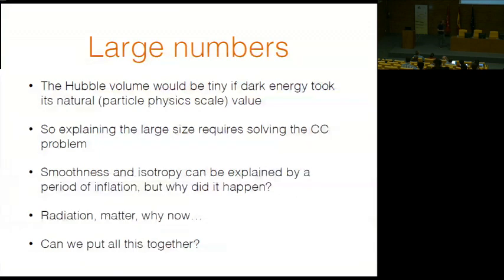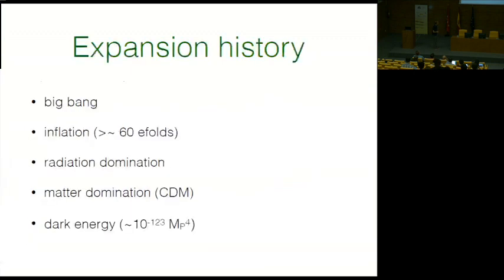There's also the 'why now' coincidence problem: why, when the universe is 10 billion years old, is dark energy dominating now? And why is the universe so smooth and isotropic on large scales but not on small ones? These questions are closely connected to the cosmological constant problem — if the CC took its natural value, the universe would have a very tiny radius.